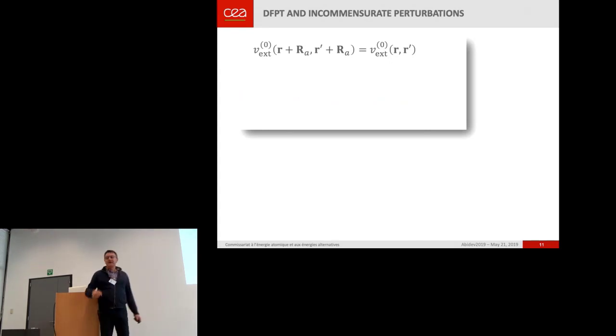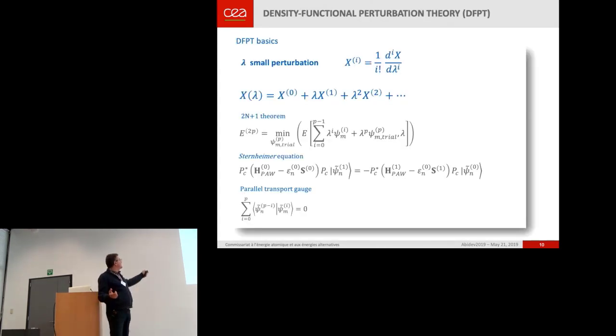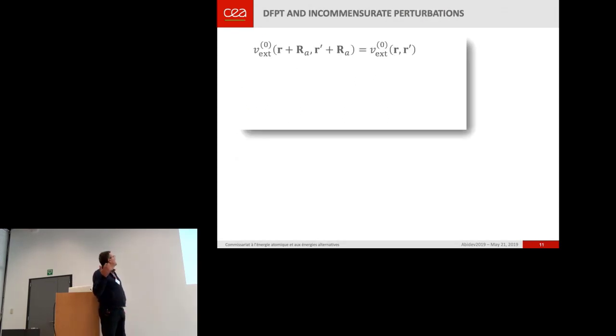And we use parallel transport gauge. And if you do that, you can exploit... And this is for general, the general formalism, but we want to obtain phonon spectra. So we want incommensurate perturbations. If you do that, you can exploit the periodicity of the potential.